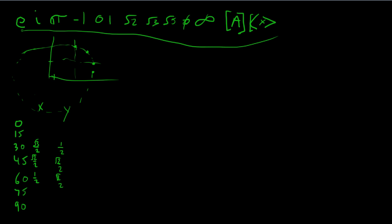What you now have are the coordinates — or what would also be known as the cosine and the sine — at 30, 45, and 60 degrees.